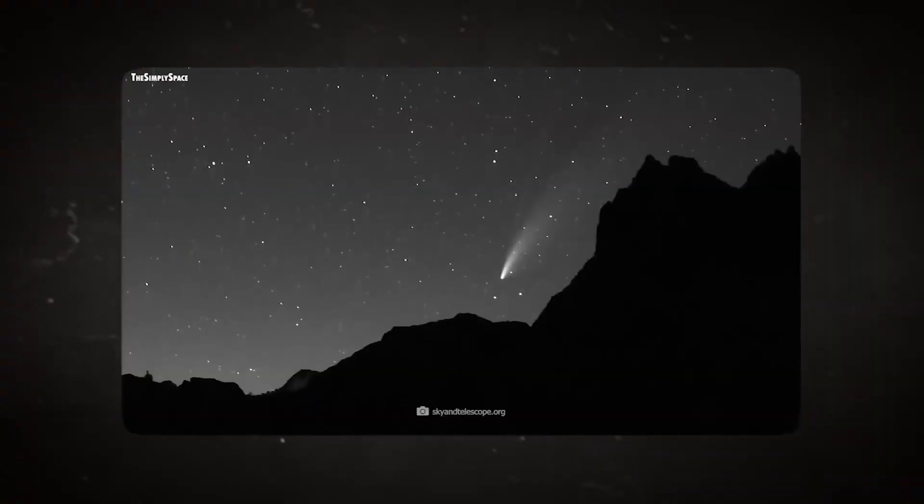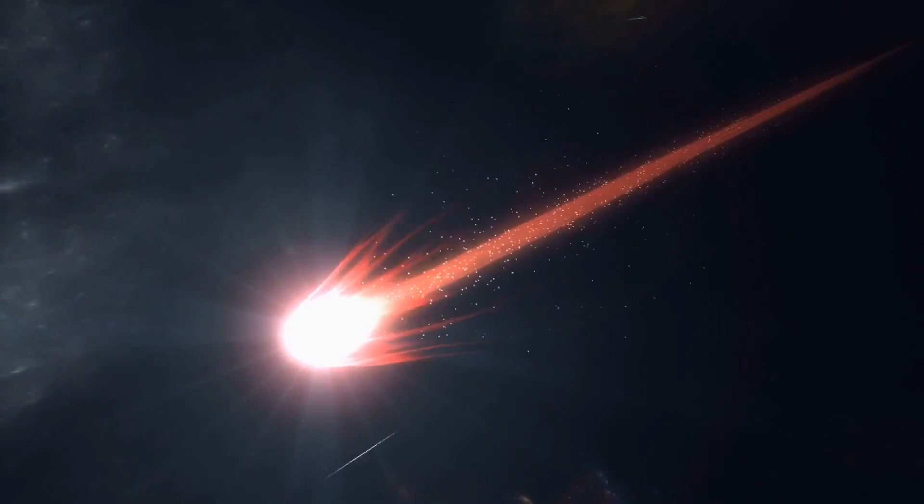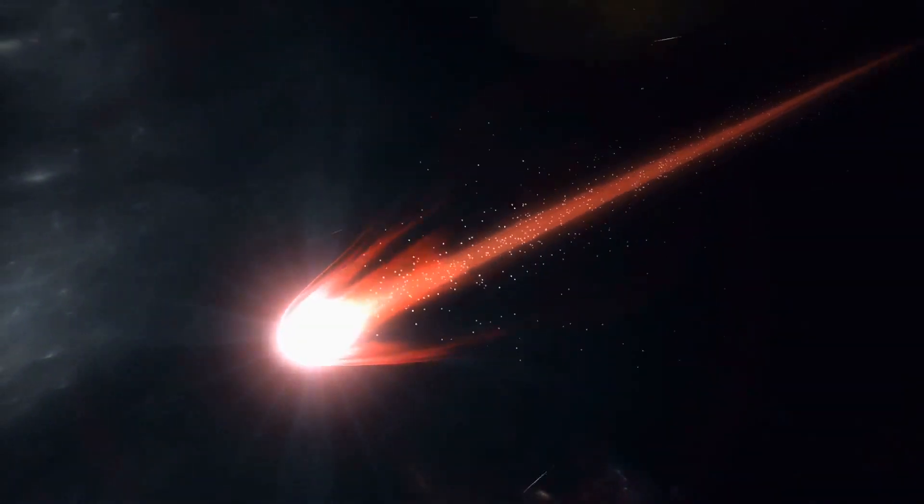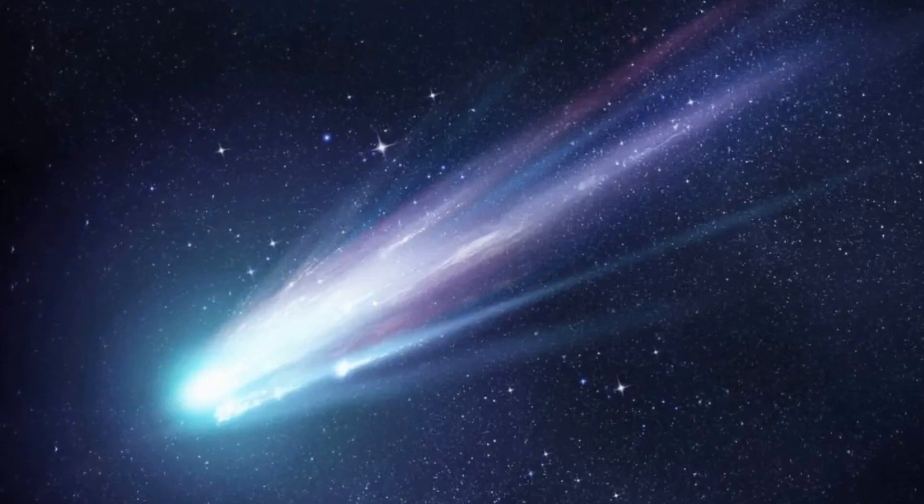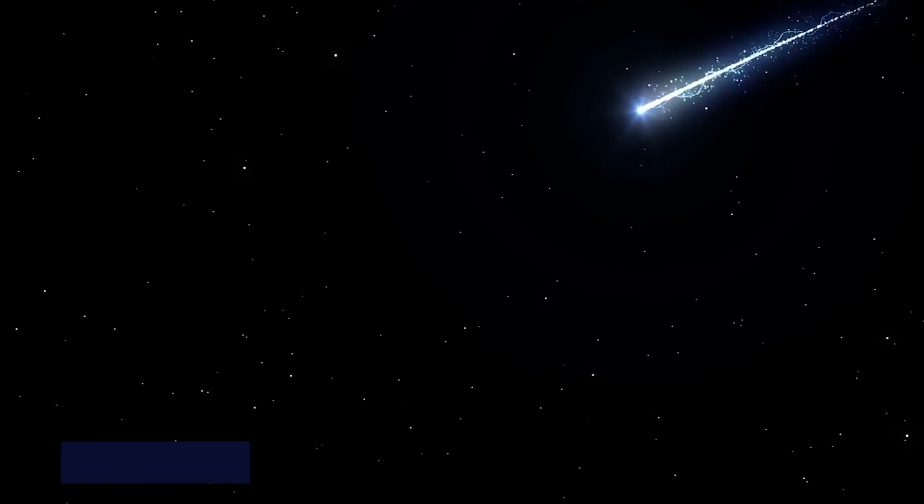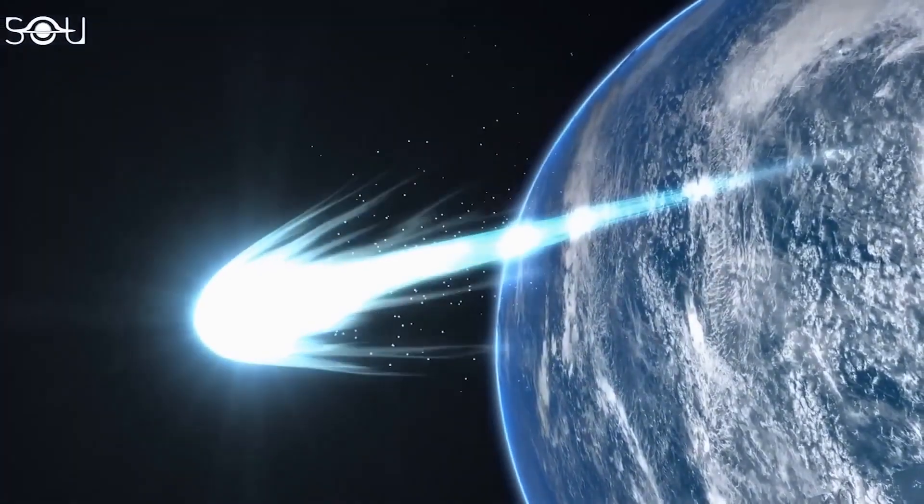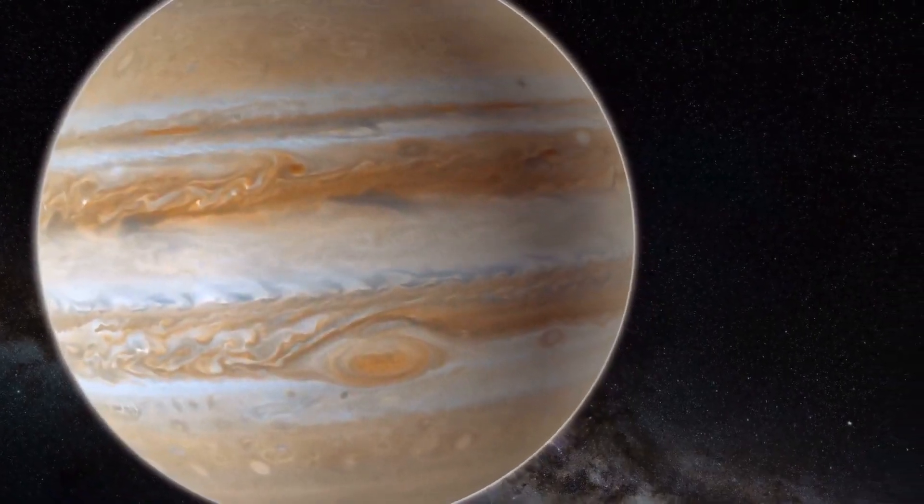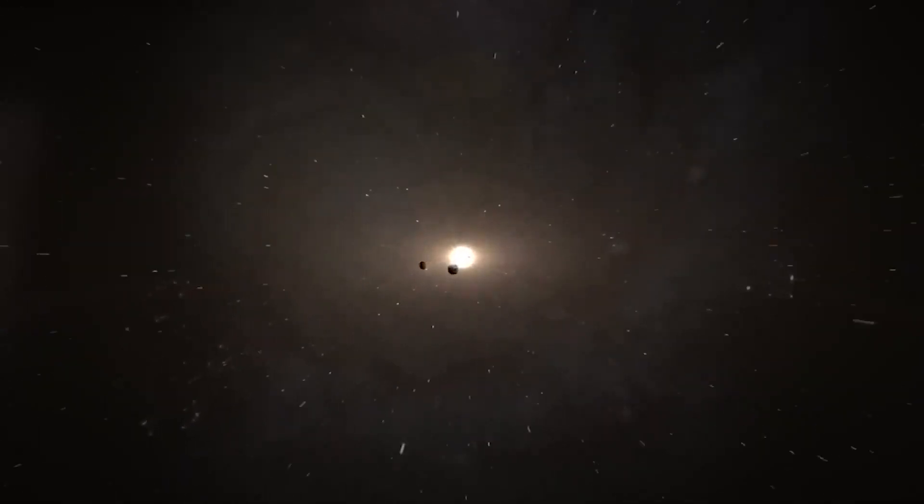Comets fall into distinct categories based on their orbital periods, which ultimately dictate how frequently we encounter them in our night sky. On one hand, there are the short period comets, exemplified by the famous Halley's Comet, which make relatively frequent appearances, with return intervals often measured in decades or centuries. These celestial travelers become somewhat familiar faces in the grand tapestry of our cosmos, punctuating our night sky every few generations.